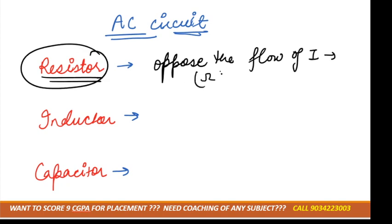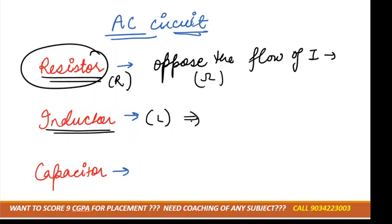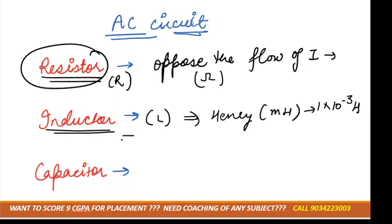The resistor is denoted by R. Now, the inductor is denoted by L. The standard unit of inductor is henry. You will generally get values in millihenry, so one millihenry is 1×10⁻³ henry.